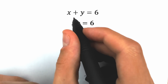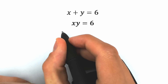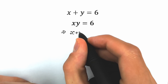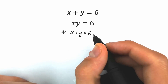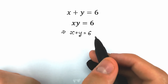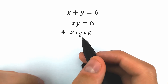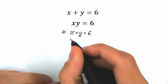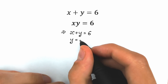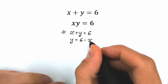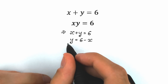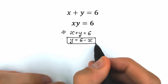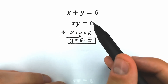Let's rewrite x plus y equals 6. First of all, let's express y from here — we can easily do that. We get y equals 6 minus x. We'll really need this expression throughout: y equals 6 minus x.